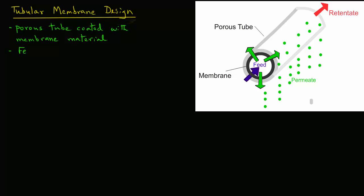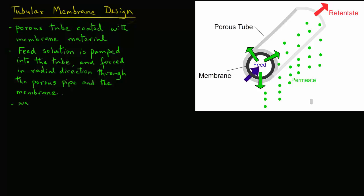The feed solution is then pumped into the tube. Because of pressure, it is forced in the radial direction through the membrane coating and then the porous pipe.